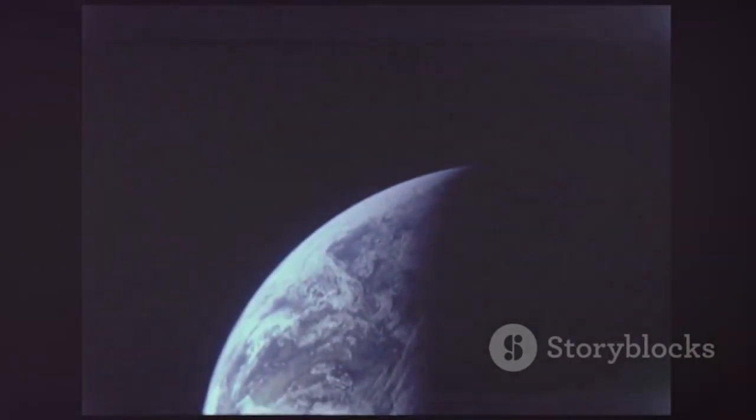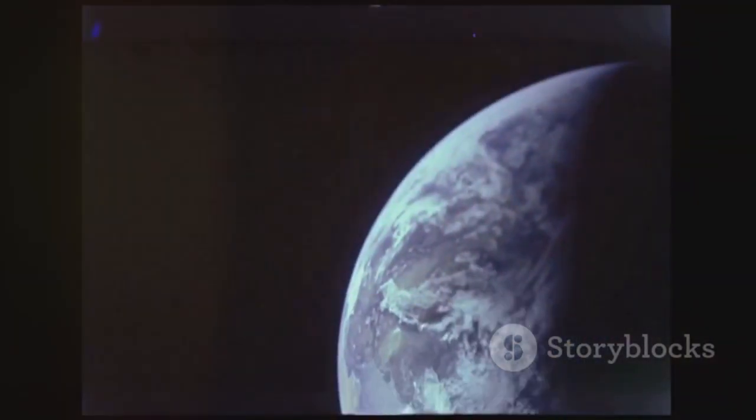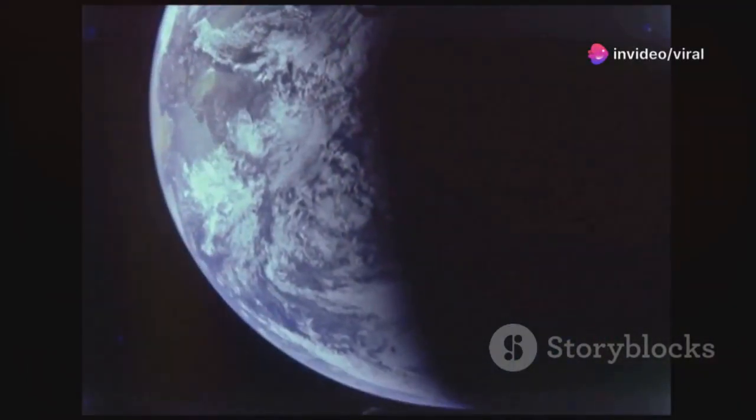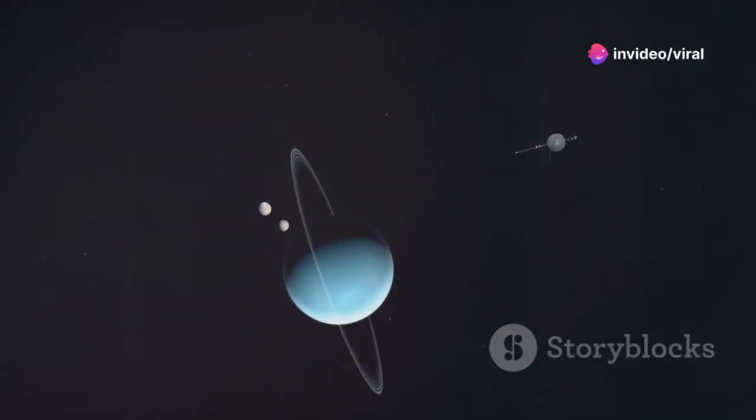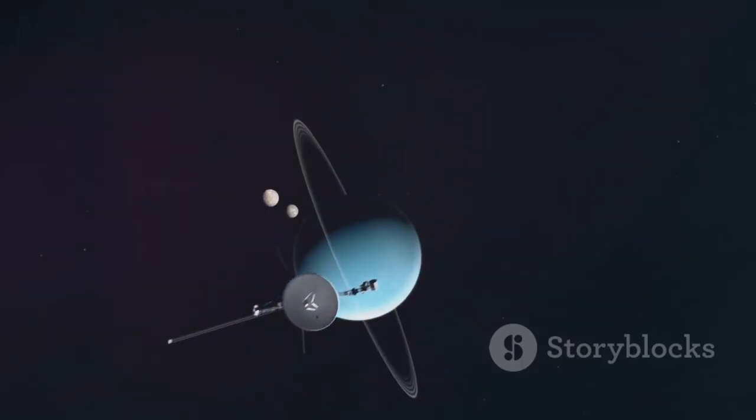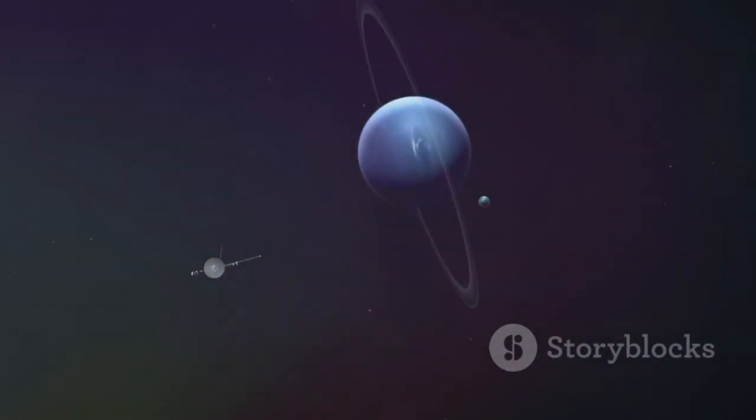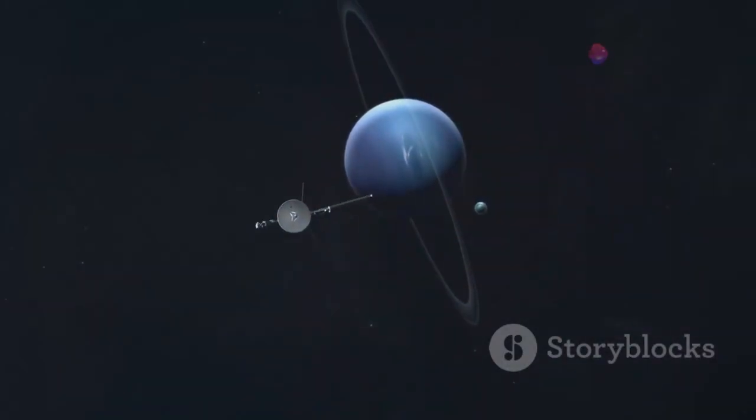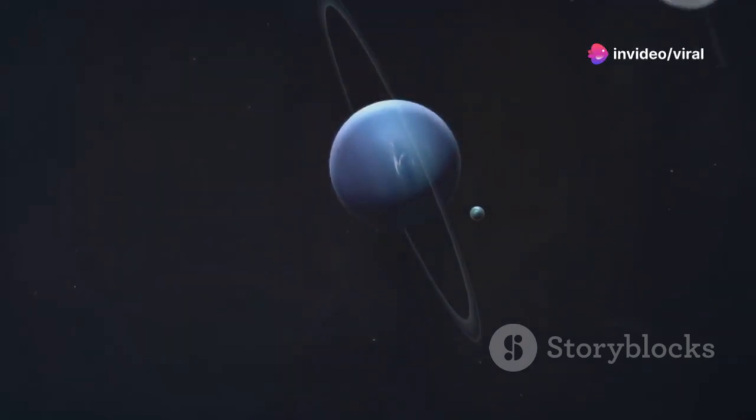Voyager 1 was equipped with a sophisticated suite of scientific instruments, cameras to capture breathtaking images, spectrometers to analyze the composition of atmospheres and surfaces, and magnetometers to measure magnetic fields. These tools were designed to reveal the hidden secrets of the gas giants and their mysterious moons, providing insights that ground-based telescopes could never achieve.